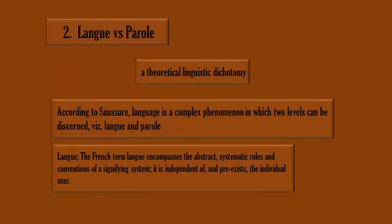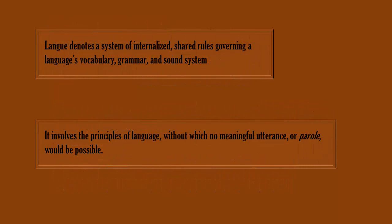Language is a complex phenomenon in which two levels can be distinguished. 'Langue' is a French word which encompasses the abstract system, rules, and conventions of a signifying system. It is independent of and pre-exists the individual user. Langue denotes a system of internalized shared rules governing a language's vocabulary, grammar, and sound system. It involves the principles of language without which no meaningful utterance or parole would be possible.